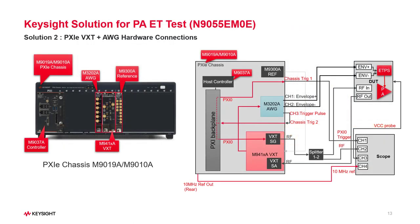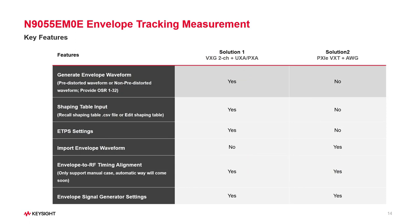Next, let's look at the modular solution. There are five modules you need: first, a PXIe chassis such as M9019A or M9010A; next, a controller module; for RF signal generation and signal analysis, a VXT transceiver module is used, which integrates the signal generator and signal analyzer internally; to generate the envelope waveform, a PXIe arbitrary waveform generator is used; and finally, a module to provide the system reference frequency. An oscilloscope is not necessary, but it's helpful to monitor the timing alignment between the RF signal and the envelope waveform. These two solutions have some feature differences, and we are constantly working to update and enhance the software — for example, automatic timing alignment will be covered in the next release.